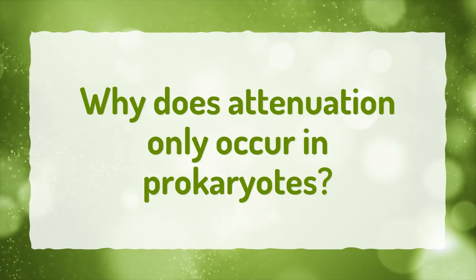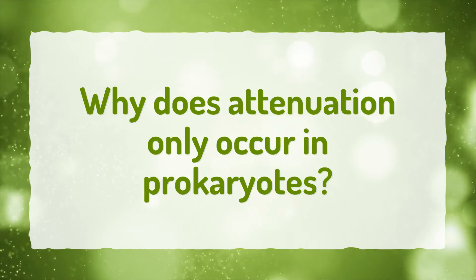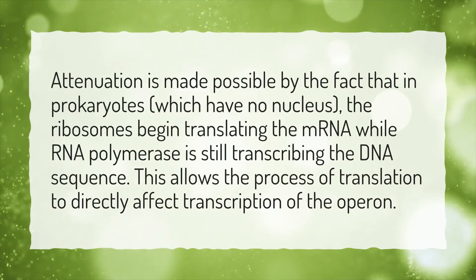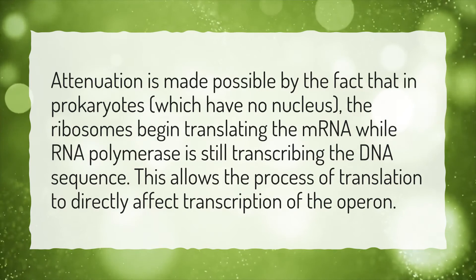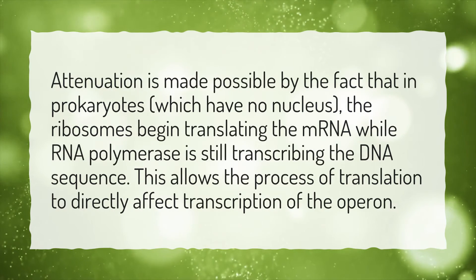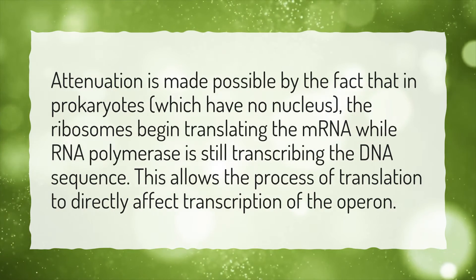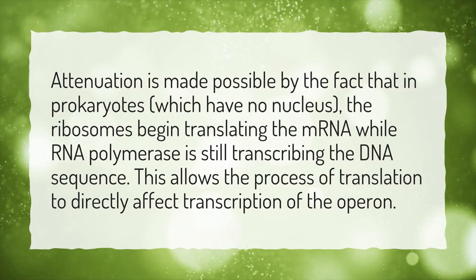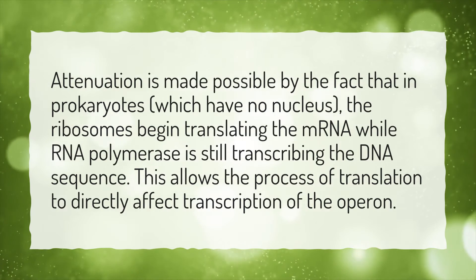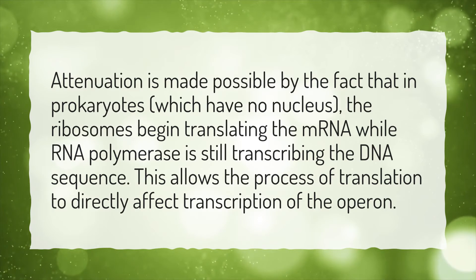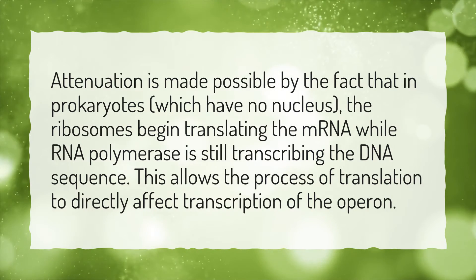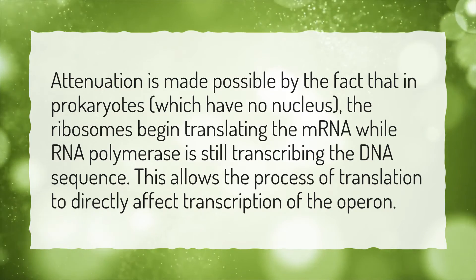Why does attenuation only occur in prokaryotes? Attenuation is made possible by the fact that in prokaryotes, which have no nucleus, the ribosomes begin translating the mRNA while RNA polymerase is still transcribing the DNA sequence. This allows the process of translation to directly affect transcription of the operon.